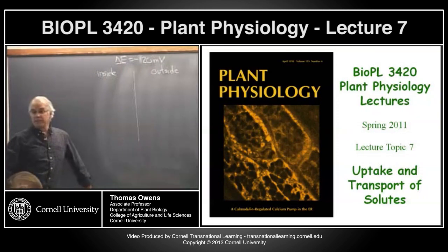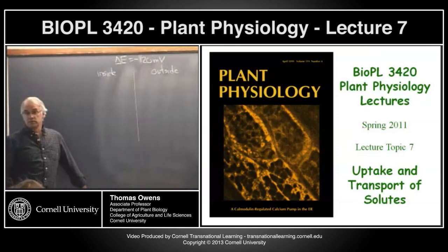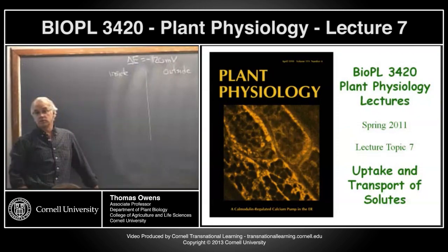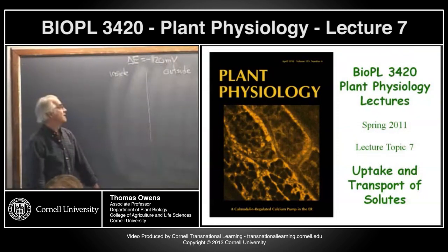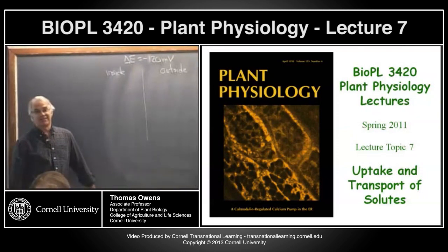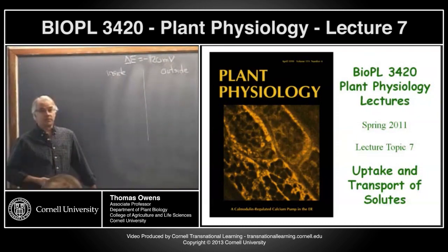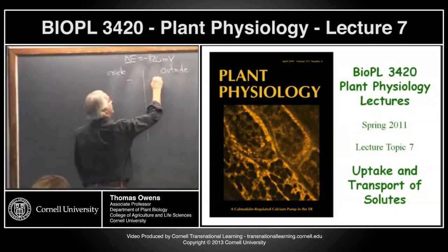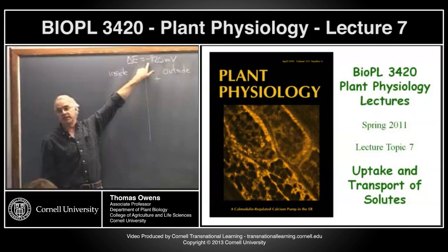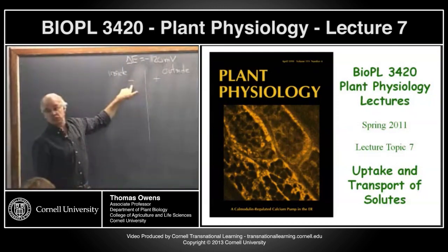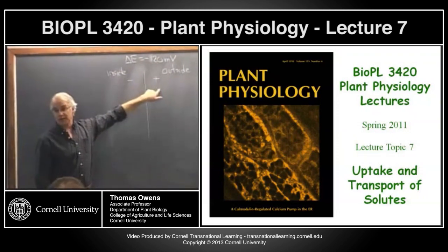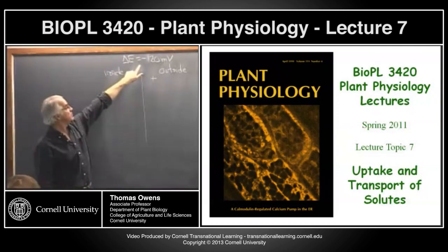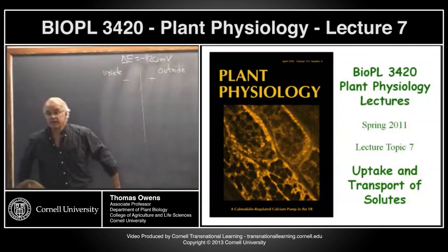What do we mean by minus 120 millivolts? What's the distribution of charge if the membrane potential is minus 120 millivolts? If there's negative charge inside the cell, then there's an excess of negative charge inside. So the charge has to be balanced — it's more negative inside and more positive outside. Membrane potential is defined as the charge inside relative to outside, with the outside arbitrarily set to zero. Whenever the membrane potential is negative, it means it's more negative inside, more positive outside.